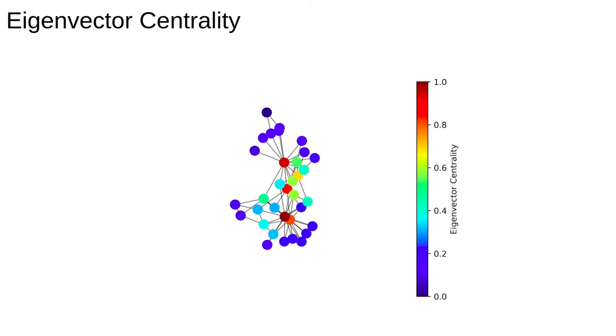An often discussed problem using this data set is to find the two groups of people into which the club split after an argument between the two teachers. We can see that there are two or three nodes which have high centrality denoted in dark red. These are important members of the social network because they are connected to other important people. Most of the other nodes are peripheral, connected to one of the central ones but not the other and not amongst themselves.